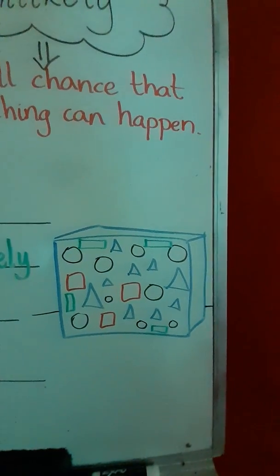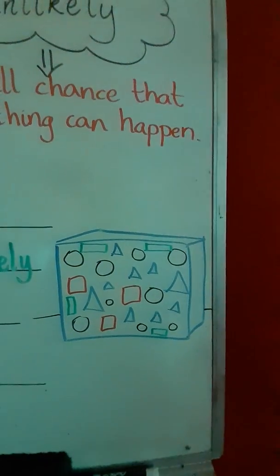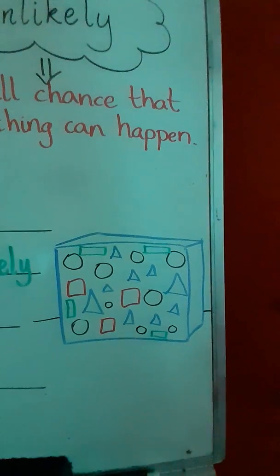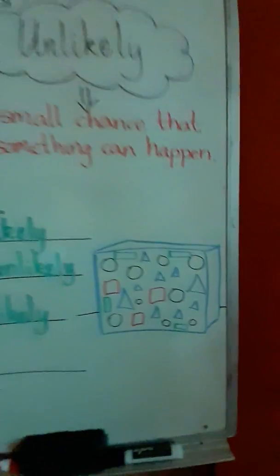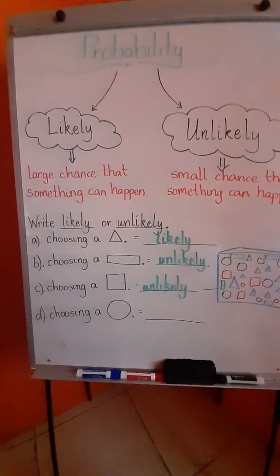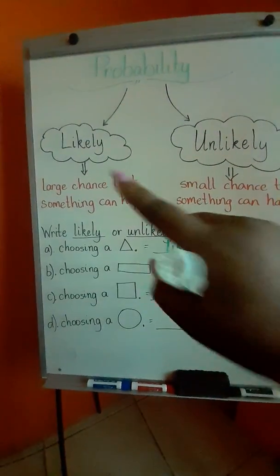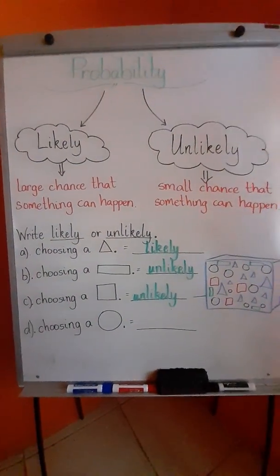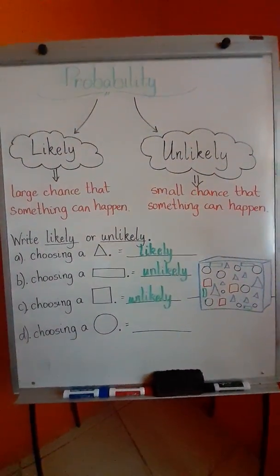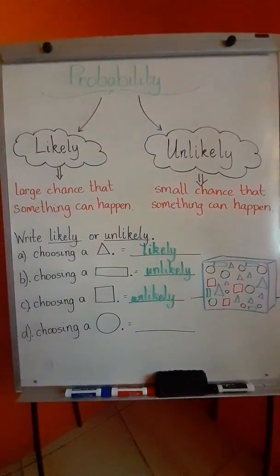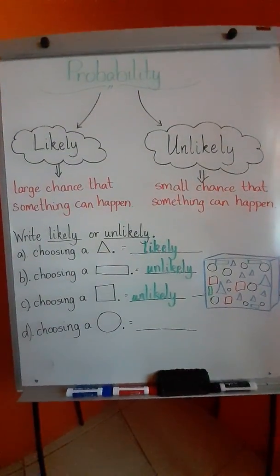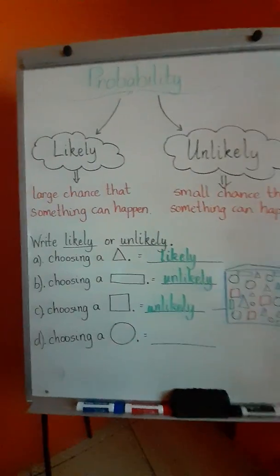In looking at the box, we see that we have many circles. We have a lot of large circles and we have small circles. Therefore, we know that the answer is likely. It is likely that we will choose a circle because there is a large chance that this can happen. So our answer is likely.